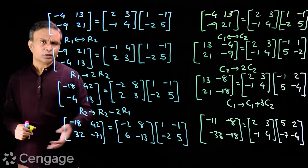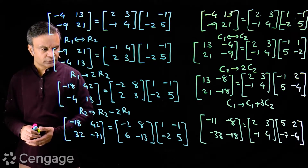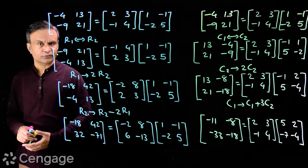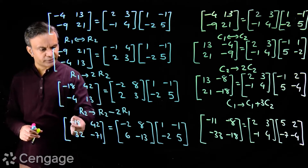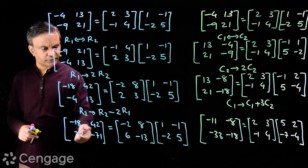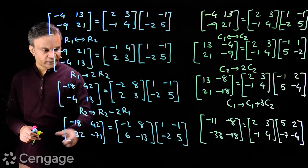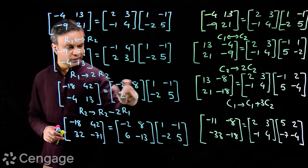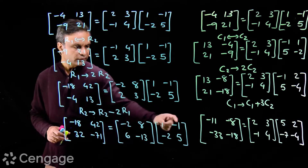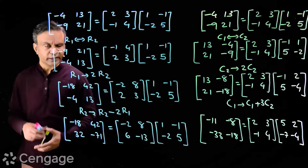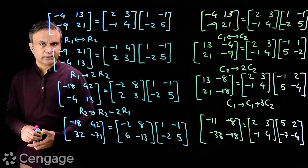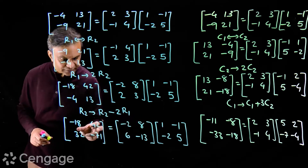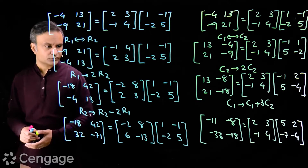Here we have one more row transformation — I am changing row 2 by R2 → R2 - 2*R1. I am multiplying elements of row 1 by 2 and then subtracting from row 2. So I have here this new matrix on the LHS and this matrix transforms to this one. This matrix is intact.